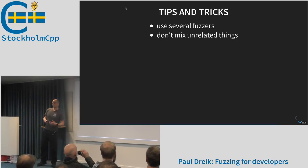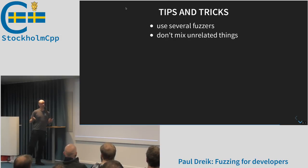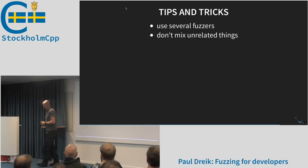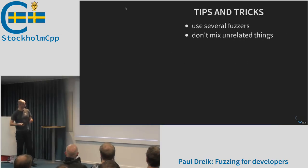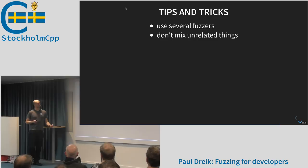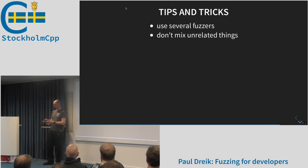Use several fuzzers — they're different so they detect different kinds of errors. AFL and libfuzzer work well together, so that's a good starting combination. Also, don't mix unrelated things: if you have an image parser that handles both JPEGs and PNGs, don't decide which to interpret at runtime. Make a separate fuzzer target for each one. Otherwise, when you mix test cases you'll mix unrelated data and the fuzzing algorithm will be much less efficient. Write one target for one thing.